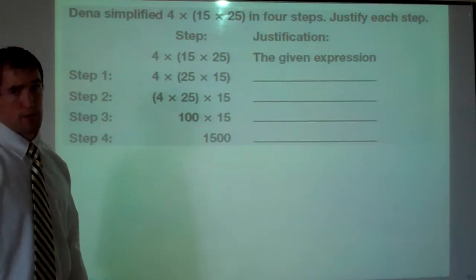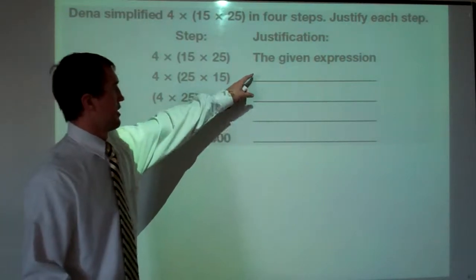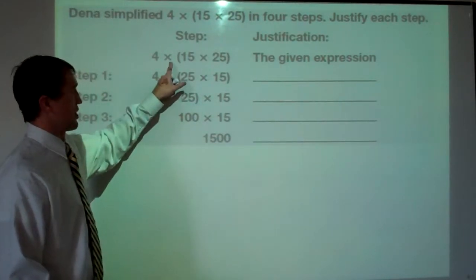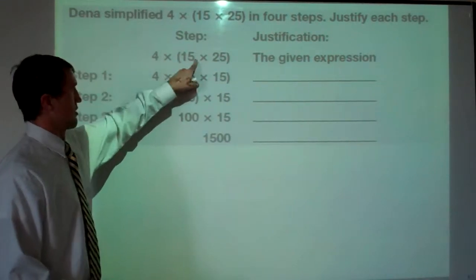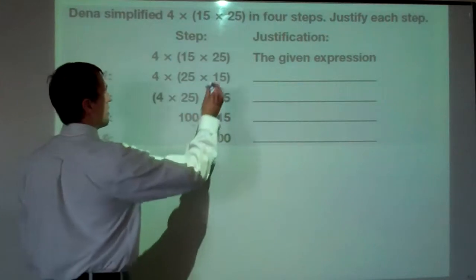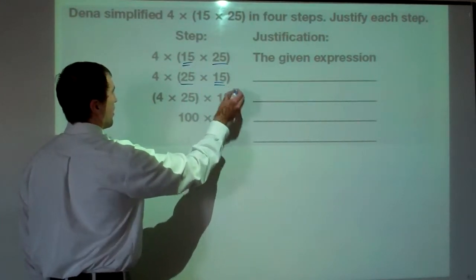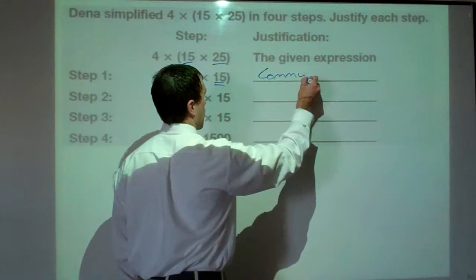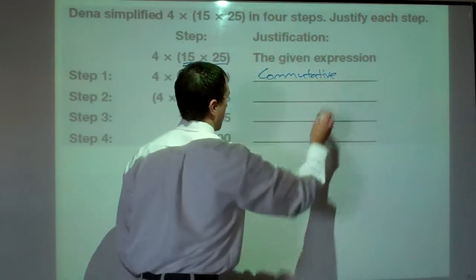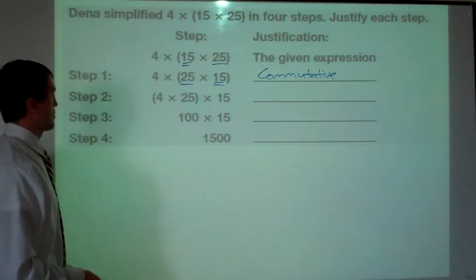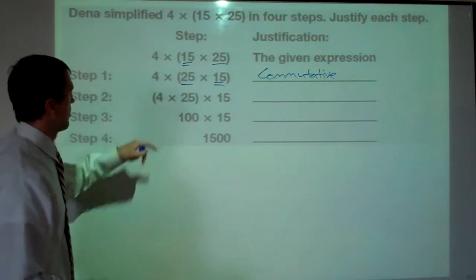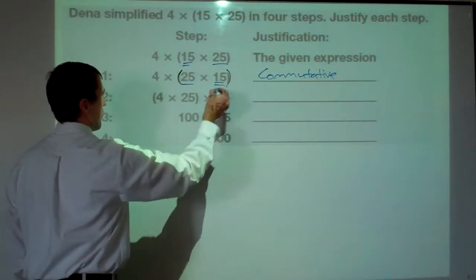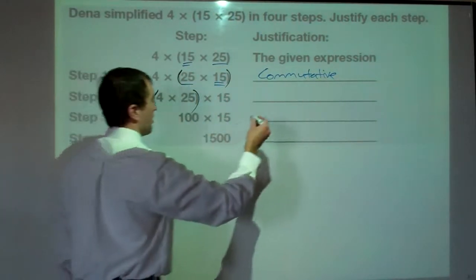These types of problems have tripped up some students. We're not looking for calculations — the solution is given. We want to see what changed from each step to the next. From the given to step one, 25 and 15 switched spots — that's order changing, so that's commutative. From step one to step two, the order didn't change — four, 25, 15 — but the location of the parentheses shifted, so that's associative.